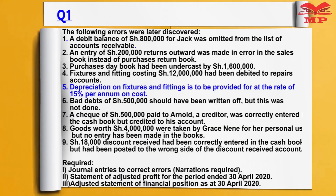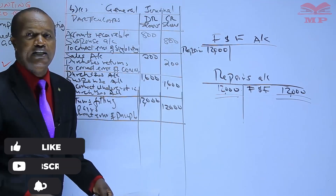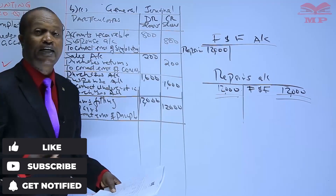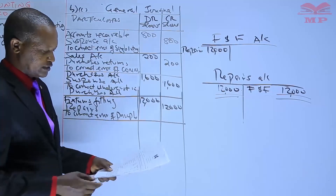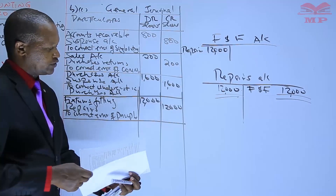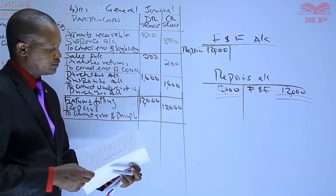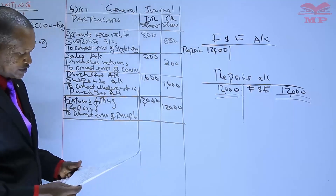Number five: depreciation on fixtures and fittings is to be provided for at the rate of 15 percent per annum on cost. That one is not an error — it's just additional information that will help us when we are adjusting the profit. We skip number five and move on to number six.